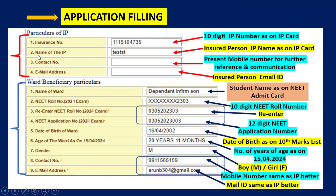For the application filling, there are two types of data required. The first is Particulars of IP — the insured person's details to be filled in four rows. The first field is the insurance number, which is the same as the IP number available on your IP card — the same number entered during the login process.